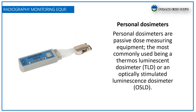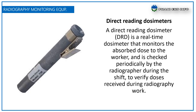Personal dosimeters are passive dosimeter equipment. The most commonly used are the thermoluminescent dosimeter (TLD) or the optically stimulated luminescence dosimeter (OSLD). The direct reading dosimeter (DRD) is a real-time dosimeter that monitors the observed dose to the worker and is checked periodically by the radiographer during the shift to verify the dose received during radiography work.